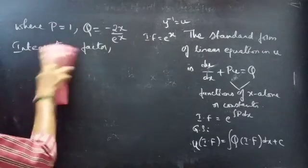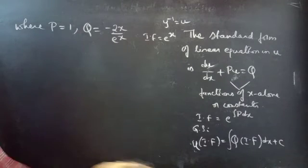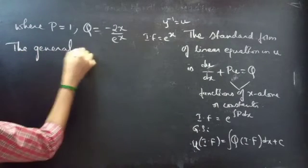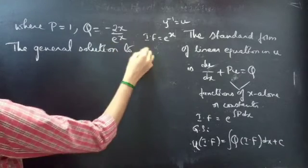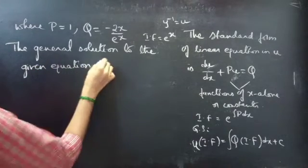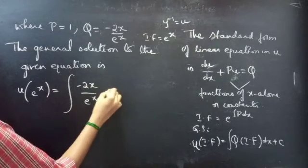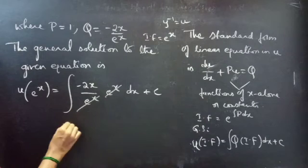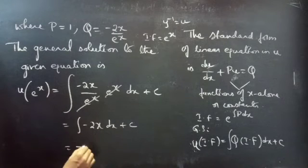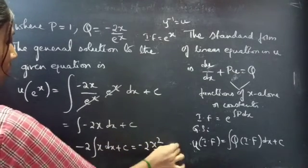Now we can find the general solution. The general solution is u·(integrating factor) = ∫Q·(integrating factor) dx + c. Here e^x gets cancelled, giving us u·e^x = ∫(-2x) dx + c = -2∫x dx + c = -2·(x²/2) + c. The 2 cancels, giving u·e^x = -x² + c.